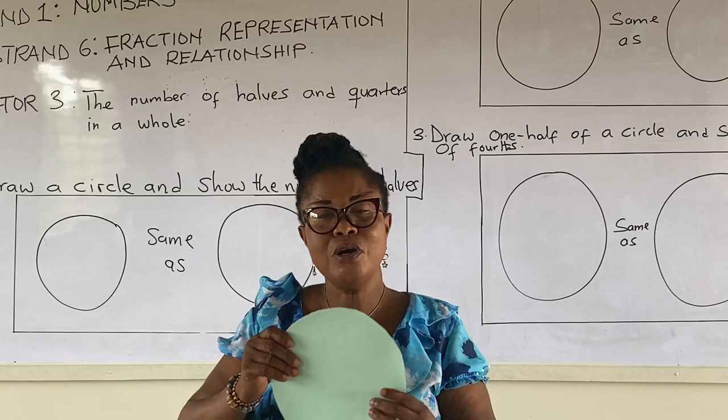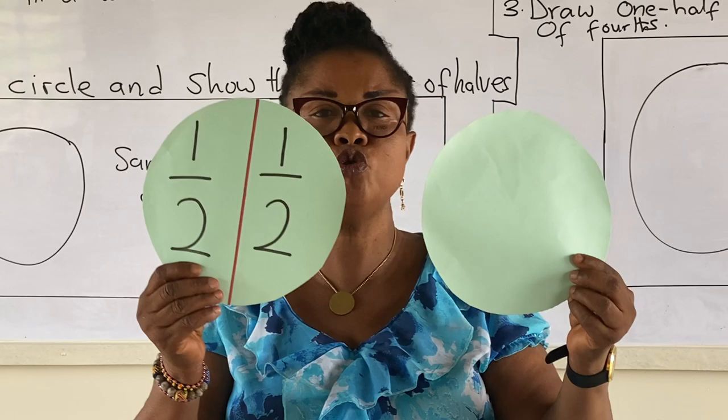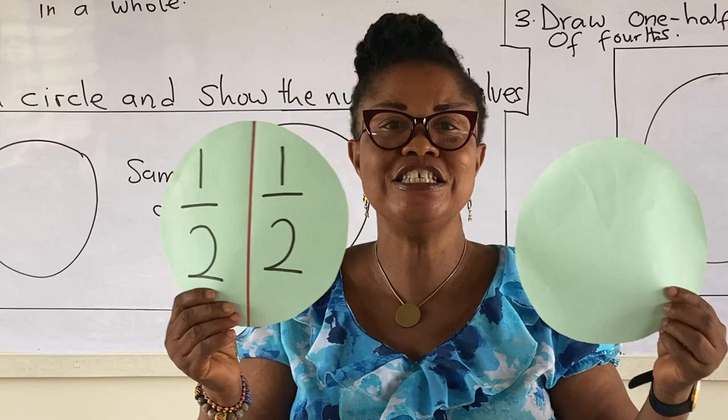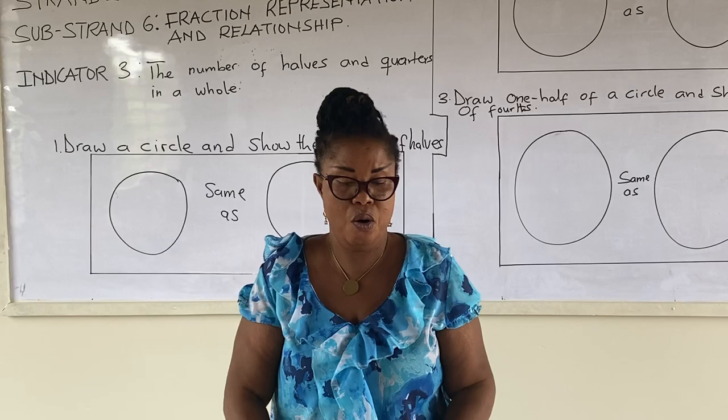Now, let's look at this whole. When this whole is equally divided into two, we have two halves. Two halves is equal to one whole.